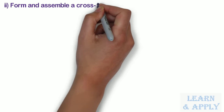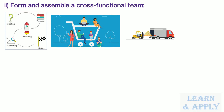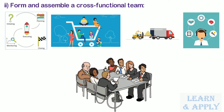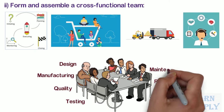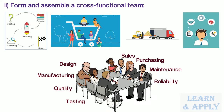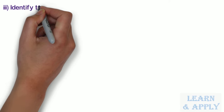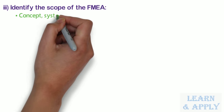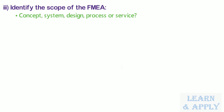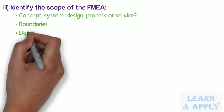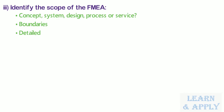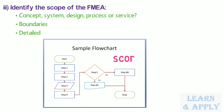Sub-step 2: Form and assemble a cross-functional team of people with diverse knowledge about the process, product or service, and customer needs. Functions often included are design, manufacturing, quality, testing, reliability, maintenance, purchasing, sales, marketing, and customer service. Sub-step 3: Identify the scope of FMEA — is it for concept, system, design, process, or service? Define the boundaries and level of detail required. Use flowcharts to identify the scope and to make sure every team member understands it in detail.